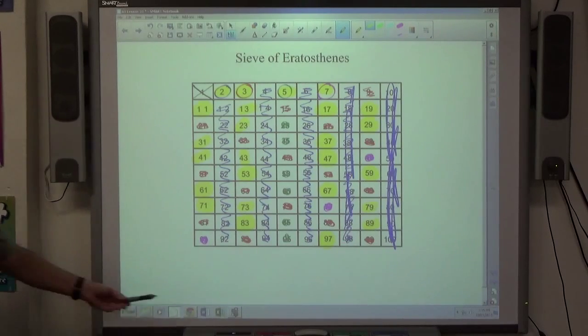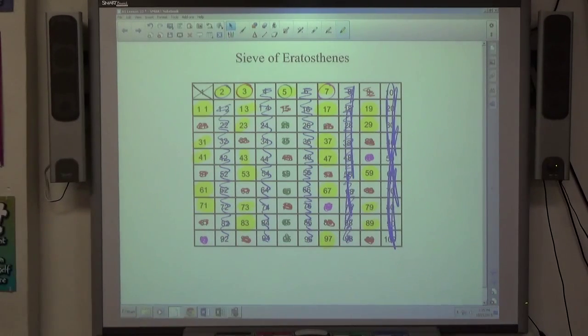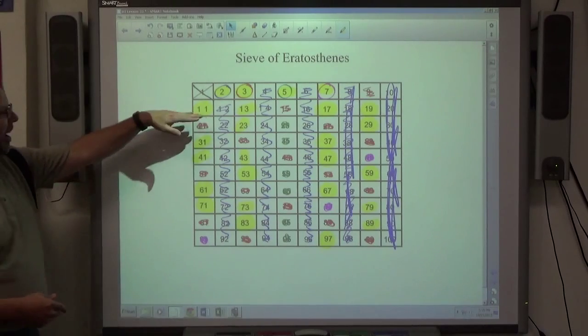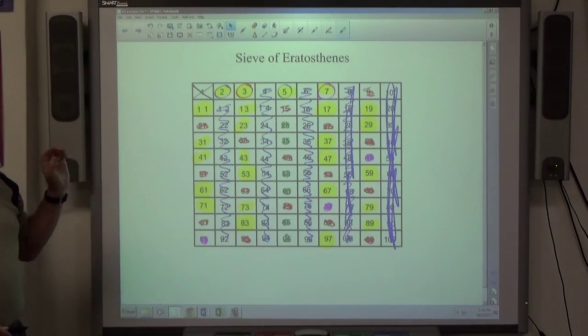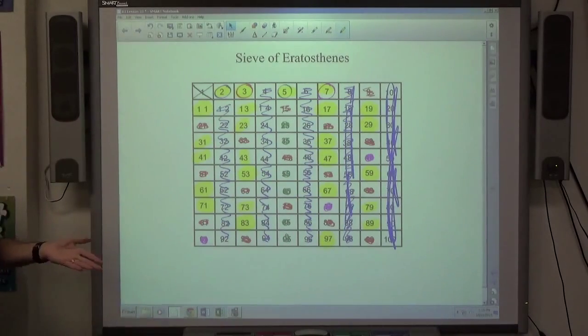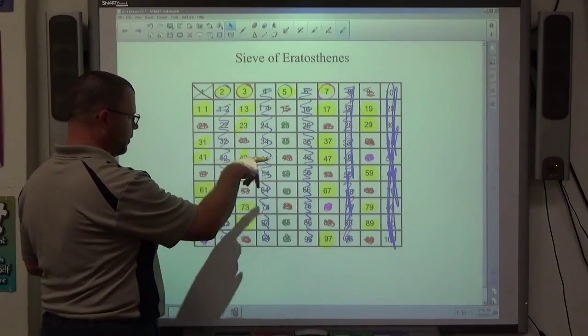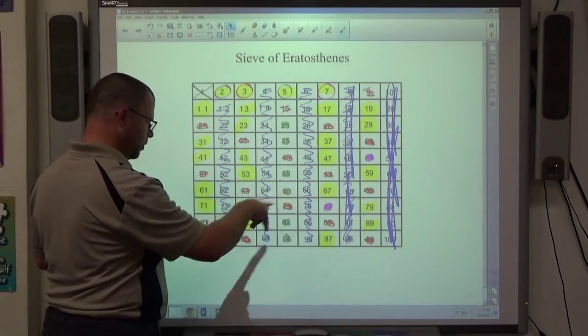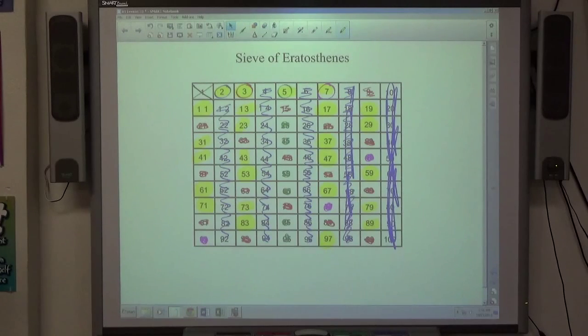When we do a prime factorization, we're trying to get down to prime numbers. Every one of those numbers can divide only by themselves and one. Your book tends to stick to the numbers 19 and less when they're doing prime factorizations. They occasionally throw one in of these bigger ones, but usually they stick between 2 and 19 for primes. If I'm not mistaken, there's 25 prime numbers between 1 and 100. I think there's 25. So 25 numbers between 1 and 100 are prime.